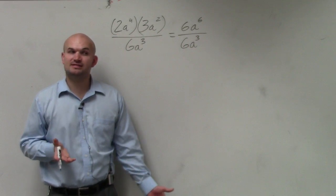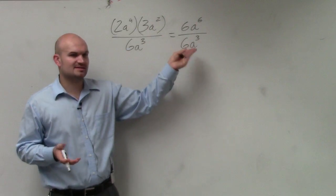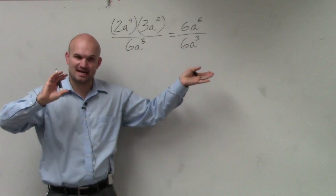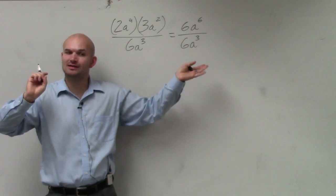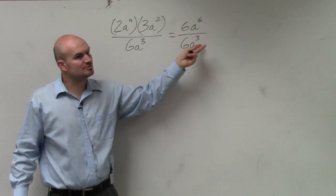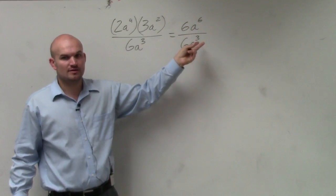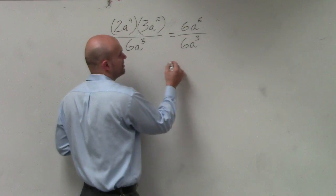Now we want to go ahead and simplify this. Well, 6 divided by 6 just goes to 1. And when you divide exponents with the same base, you subtract the powers. So 6 subtract 3 would give us 3. And that's going to remain up there in the numerator.